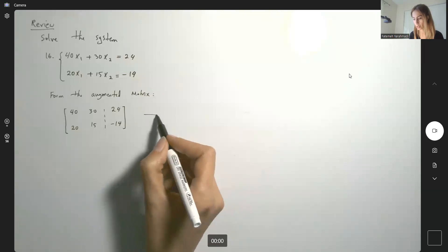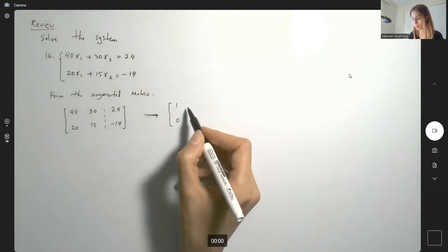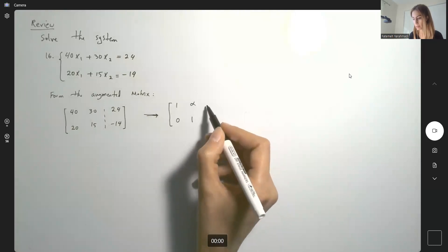So, remember that we're going to try to convert this into this format: 1, 0, and then 1, some elements.